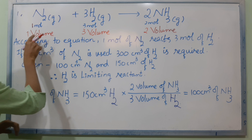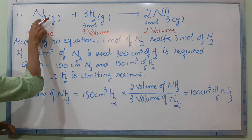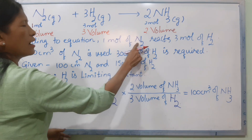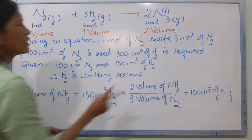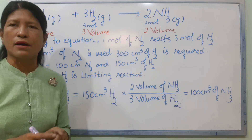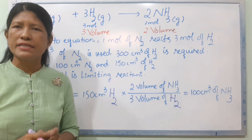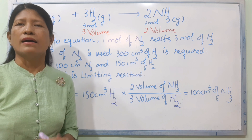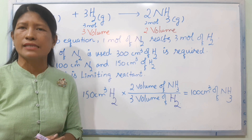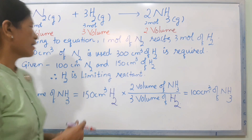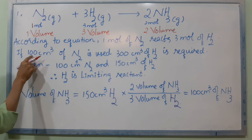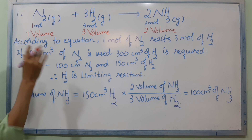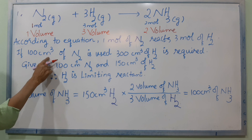The equation is here. One mole is nitrogen, three moles is hydrogen. Nitrogen is 100 cm².